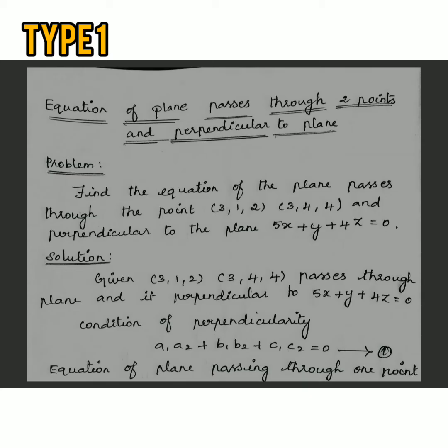Take the solution. The given points are (3, 1, 2) and (3, 4, 4), and the given plane is 5x + y + 4z = 0.